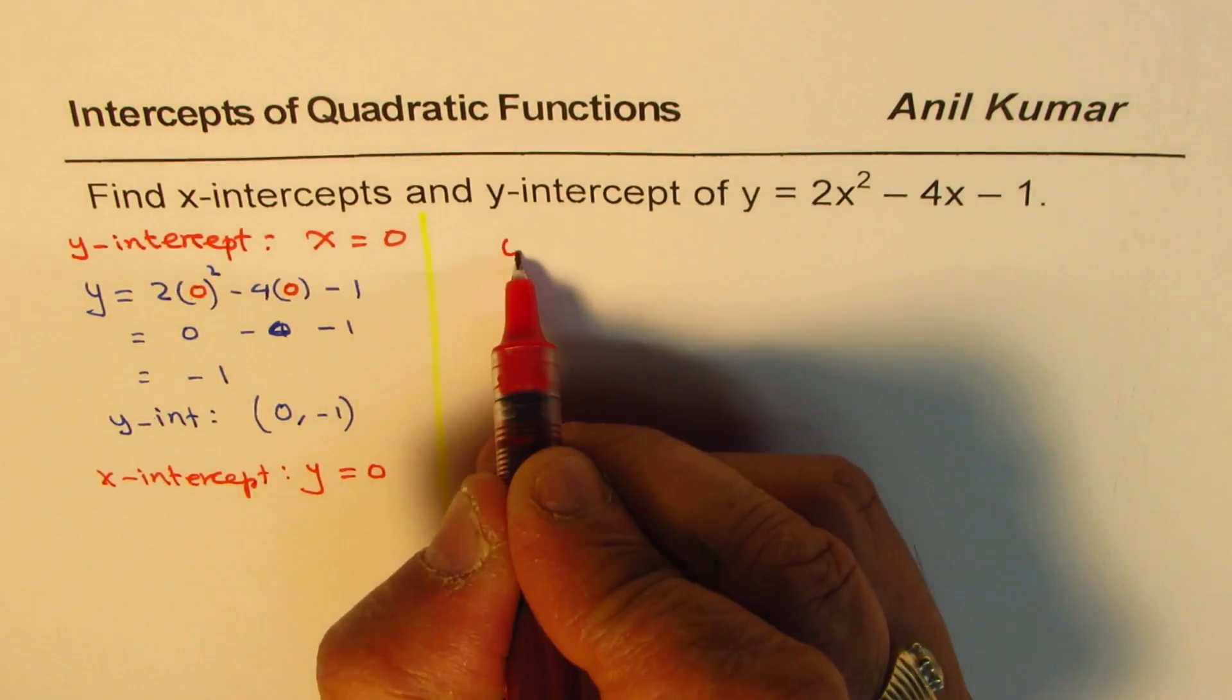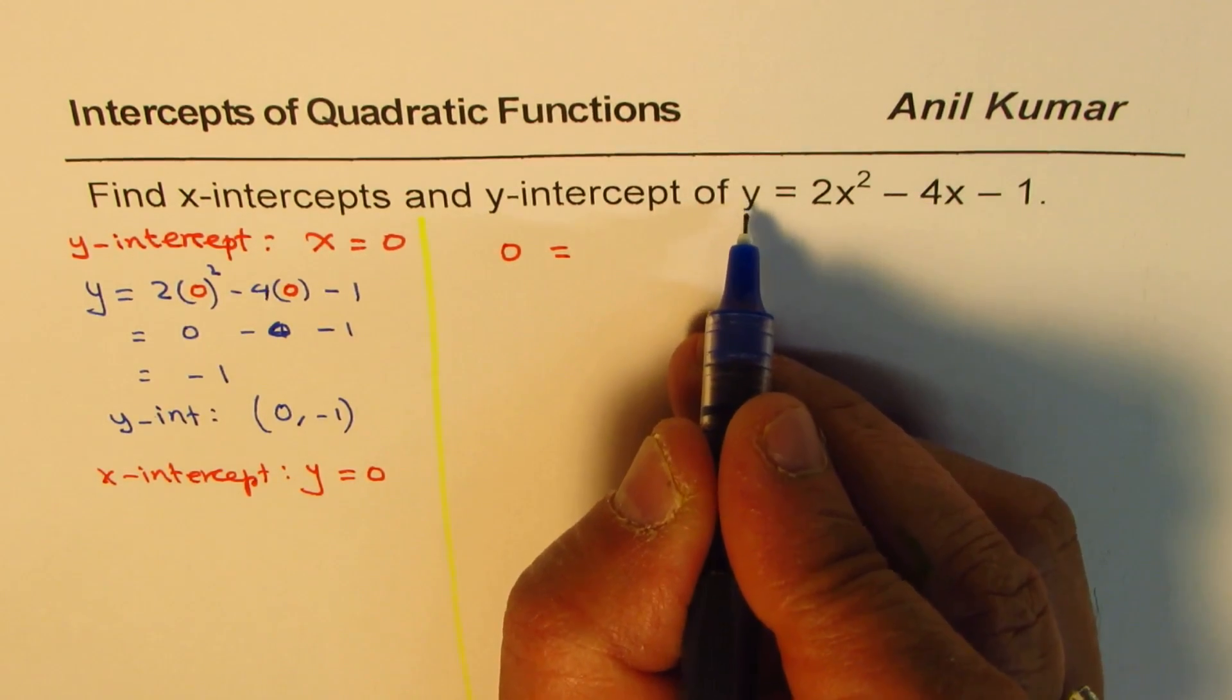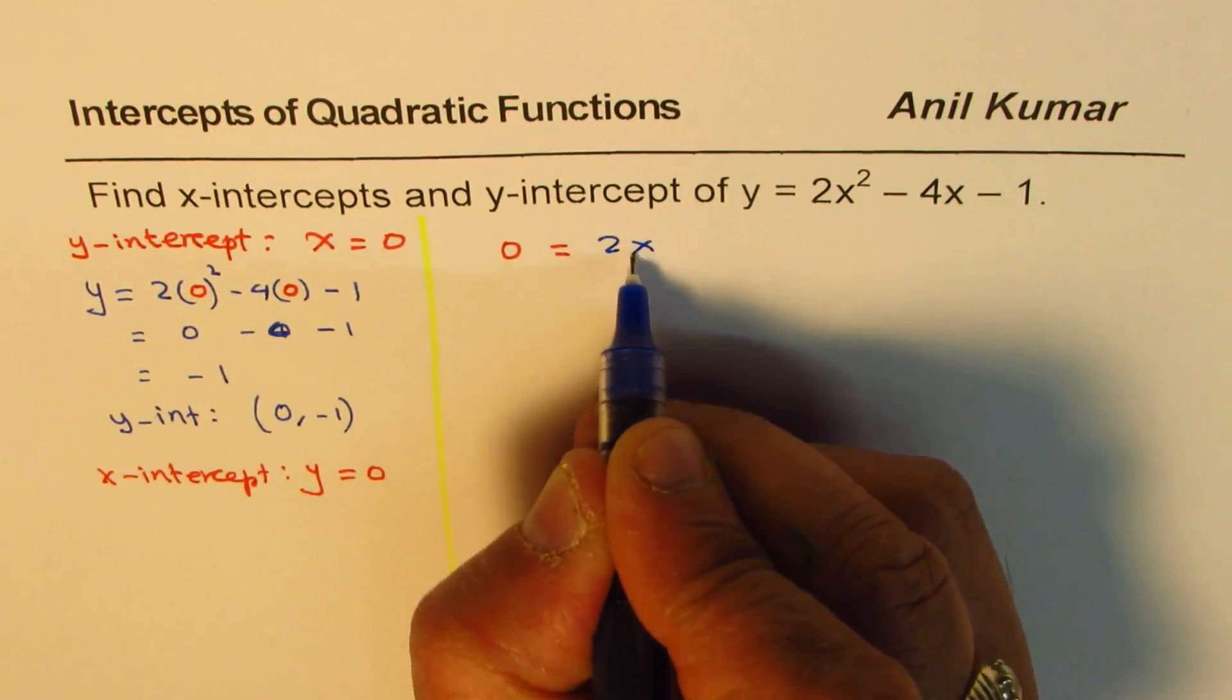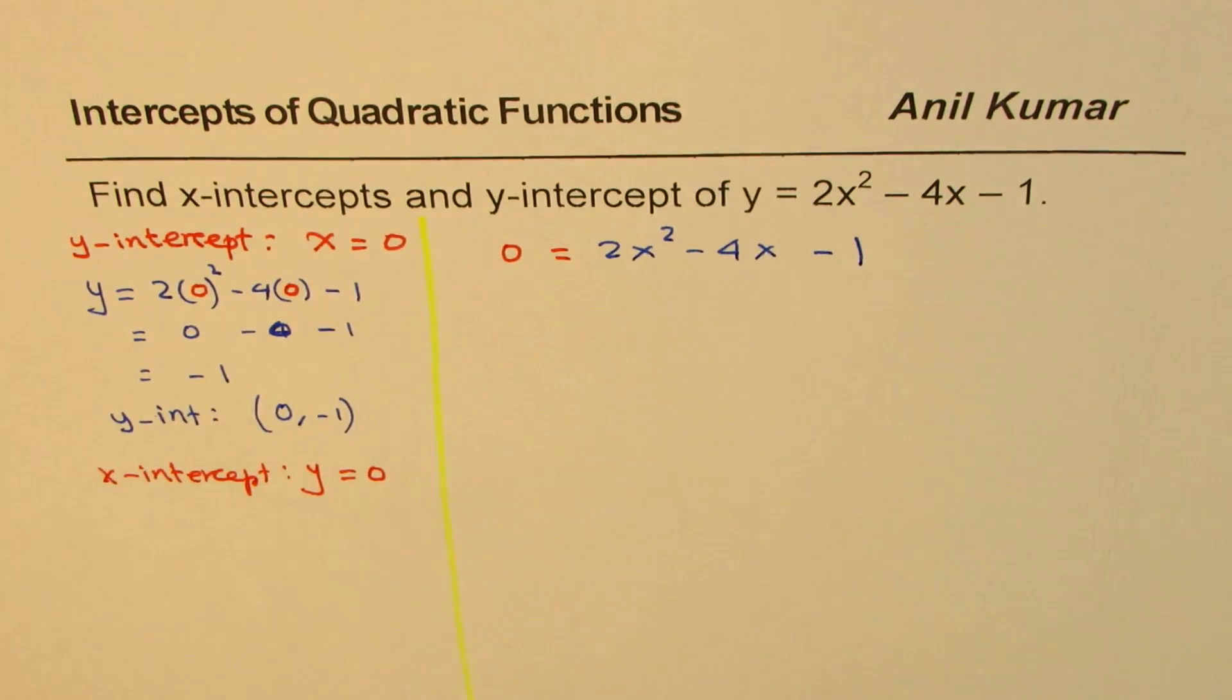So we get the equation as 0 equals 2, let's rewrite the whole equation, 0 for y, 0 equals 2x squared minus 4x minus 1. Now we need to solve this equation.